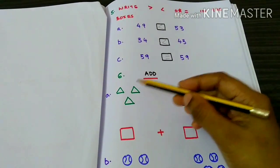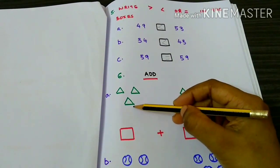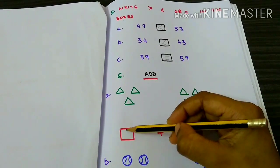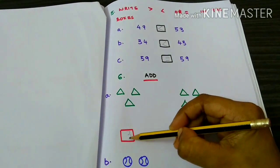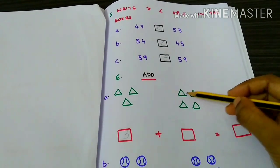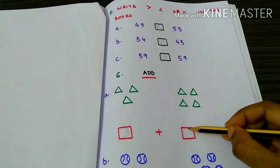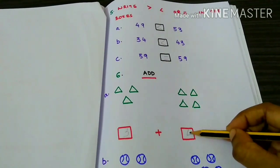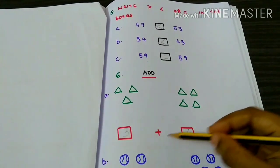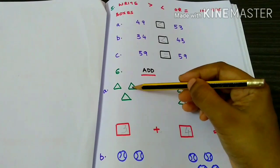Add 1, 2, 3. Then 1, 2, 3, 4. 3 plus 4 equals 7.